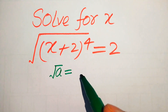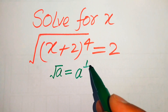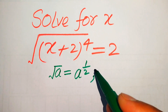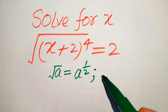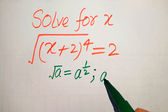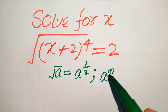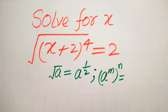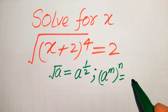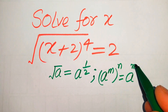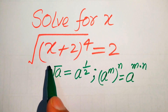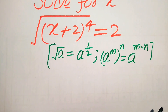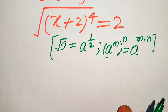We know that if you have the square root of a, we write it as a to the power of 1/2. We also use another exponential formula: if we have a to the power of m, to the power of n, it equals a to the power of m multiplied by n. We need these two exponential laws to apply to the left-hand side.